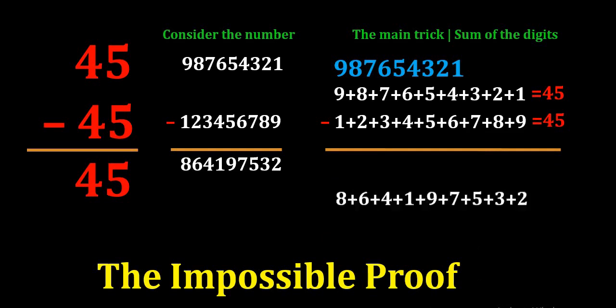And in the last number 864197532, it equals 8 plus 6 plus 4 plus 1 plus 9 plus 7 plus 5 plus 3 plus 2, which again is equal to 45.